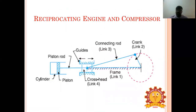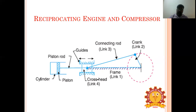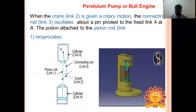The inversions of single slider crank chain are: reciprocating engine or compressor, Whitworth quick return mechanism, gnome engine or rotary engine, crank and slotted lever mechanism, and bull engine or hand pump. In the engine the piston is the driver; for the compressor, the crank is the driver.